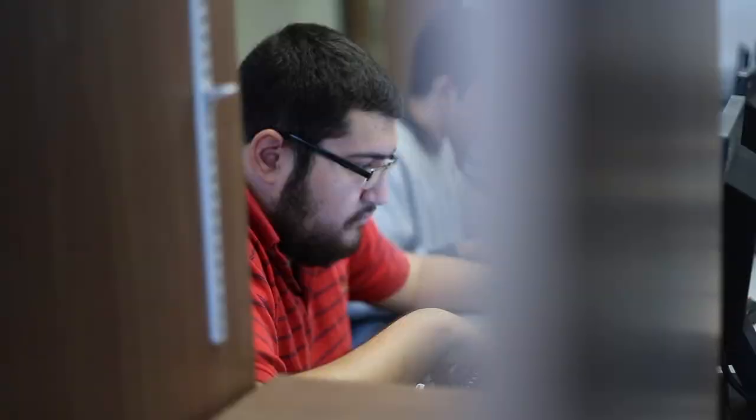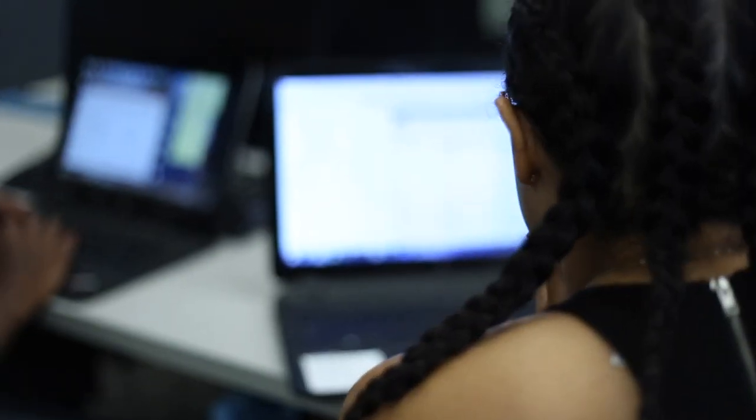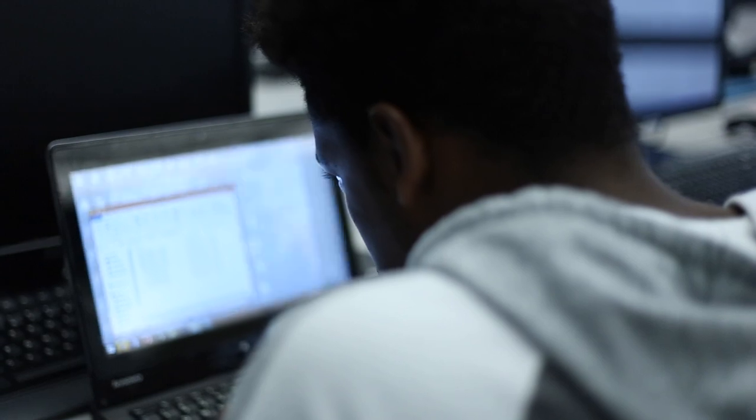St. Leo University offers three distinct degree programs or tracks. We have the CIS track, which is computer information systems, and then the second track is computer science. This is purely computer science, targeted for people who are interested in becoming computer scientists. And then the third one is a cyber security track.